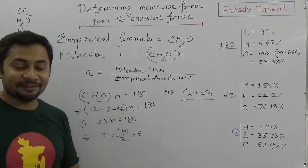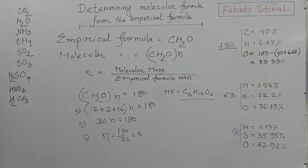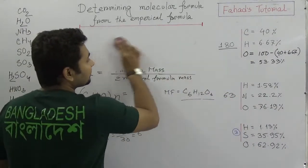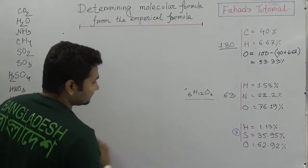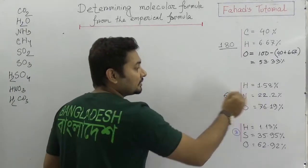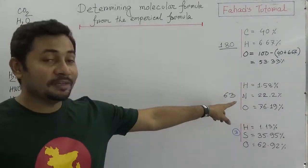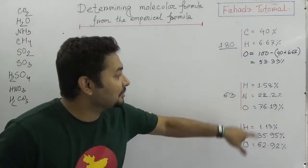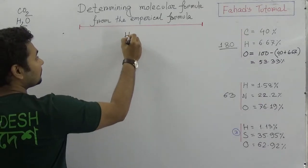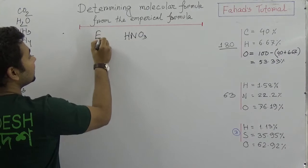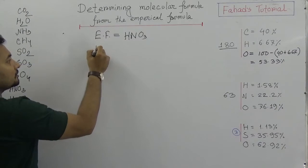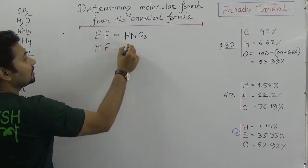So I hope you understand. Now for the next example: the empirical formula from the previous class was HNO3. Now I need to find out the molecular formula. The molecular mass given is 63. So we set (HNO3)N = 63.